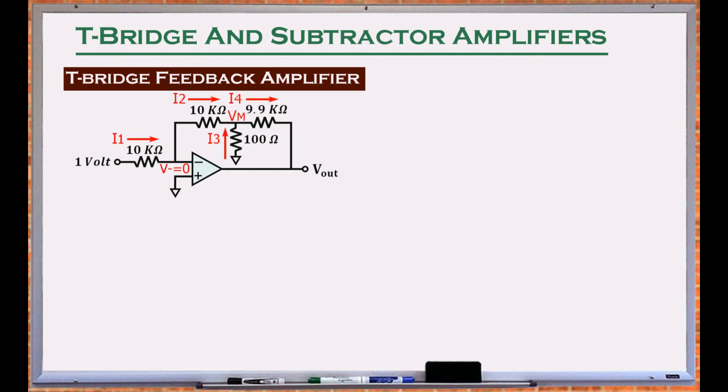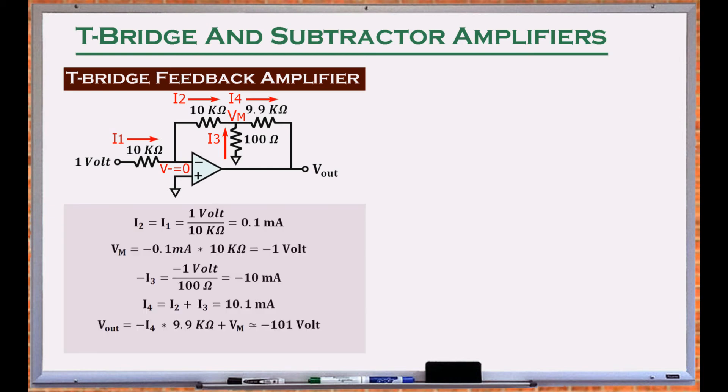To solve for the output, we follow the signal and the current from the input to the output. Using reasonable values for resistors, this circuit provides a high gain, which otherwise is only attainable with a bigger than 1 megaohms resistor in the feedback path.